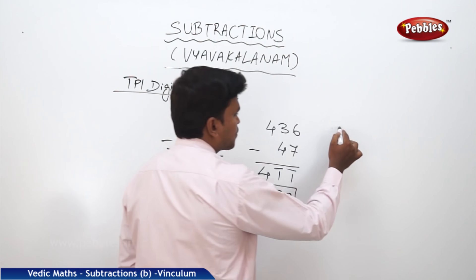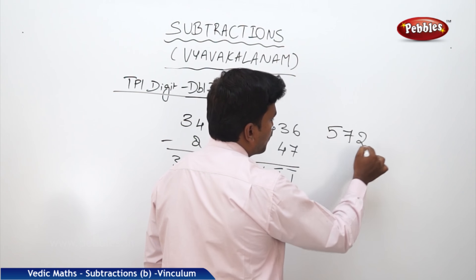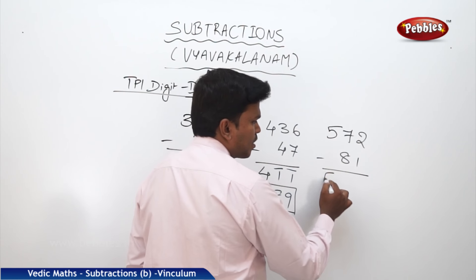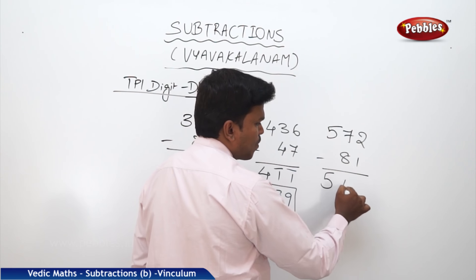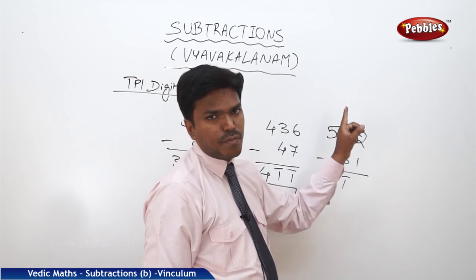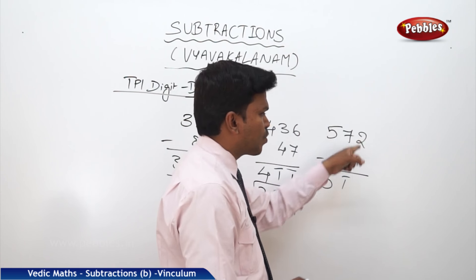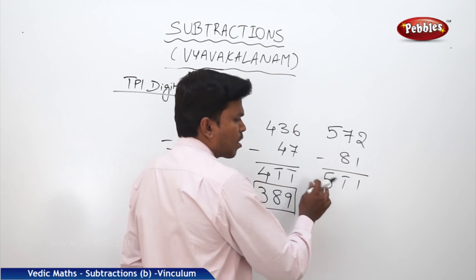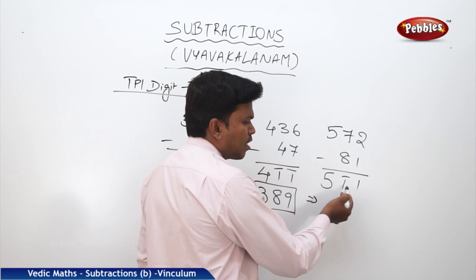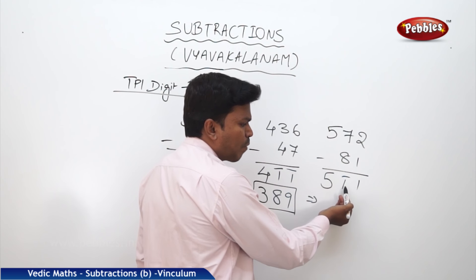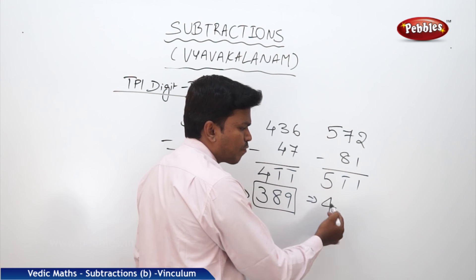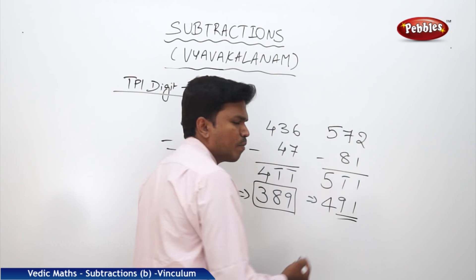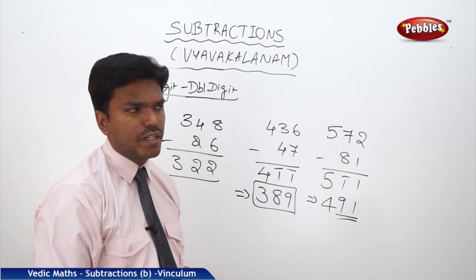Example: 572 minus 81. Drop 5. 7 minus 8 is not possible, so reverse: 8 minus 7 equals 1 bar. 2 minus 1 equals 1 directly. We have 5, 1 bar, 1. Convert: 5 becomes 4, complement of 1 is 9, drop 1 as it is. Answer: 491.